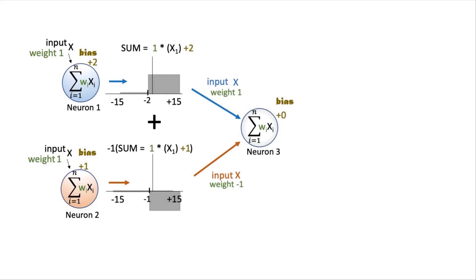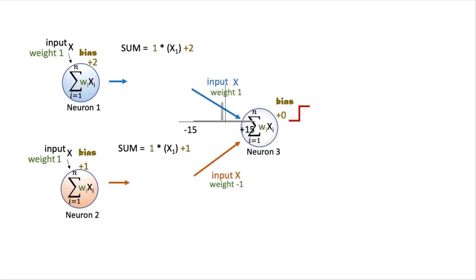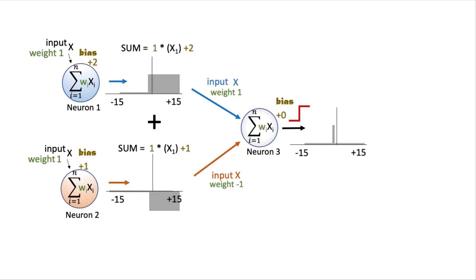Let's give the third neuron our typical step activation function. We can now see that if we take the two outputs of two step function single neurons, where the second neuron's transition point is slightly shifted over from that of the first neuron, and then we use a third neuron that subtracts the output of the second neuron from the output of the first neuron, the output of this third neuron is now a thin rectangle as a function of the original input. So in summary, two neurons that produce step functions can be combined into a third neuron that produces a rectangle.